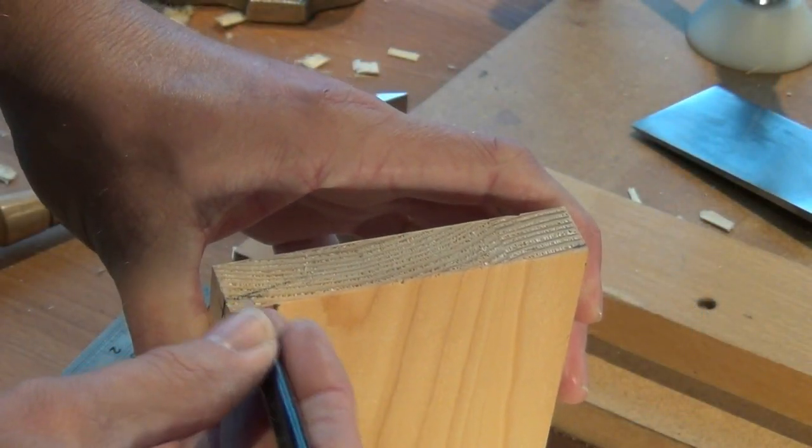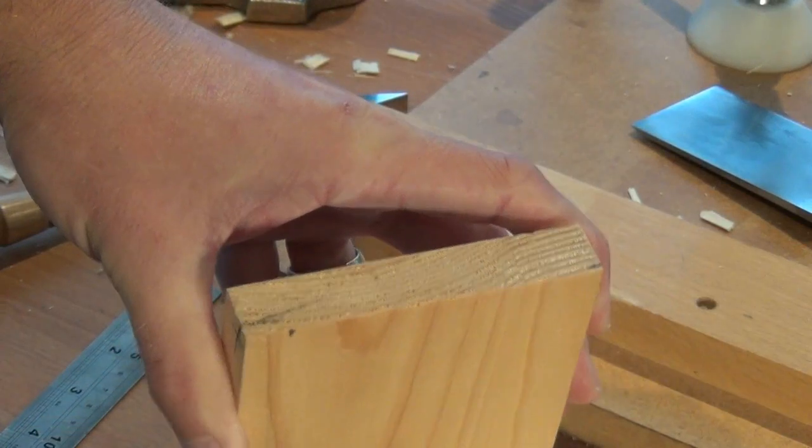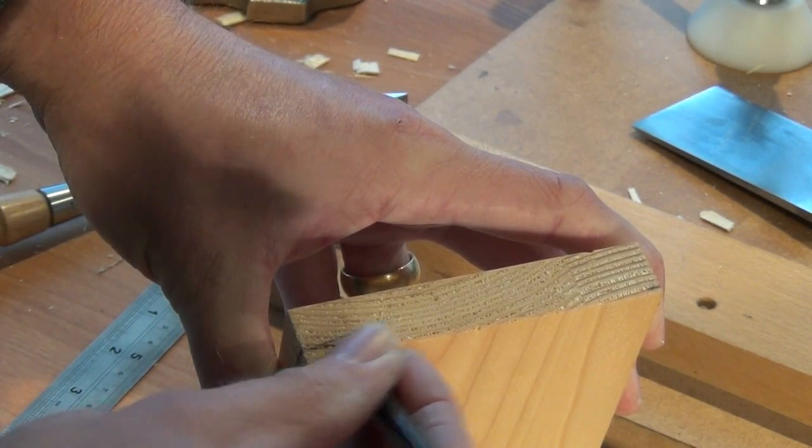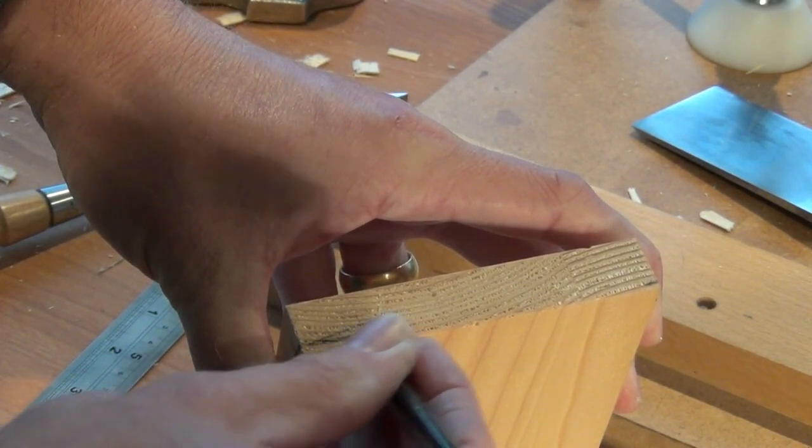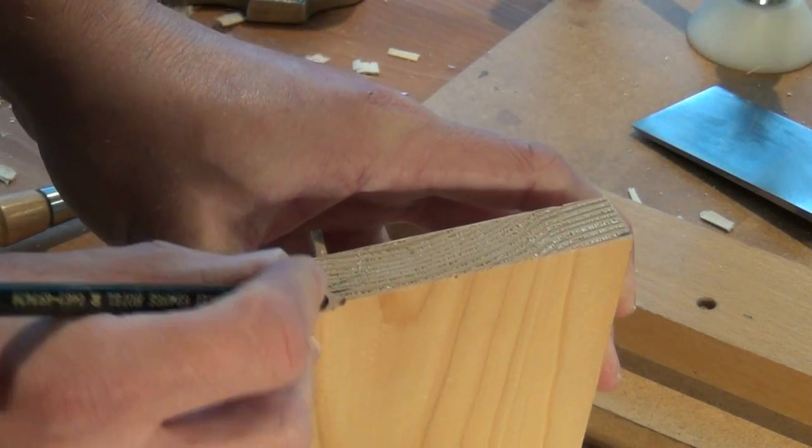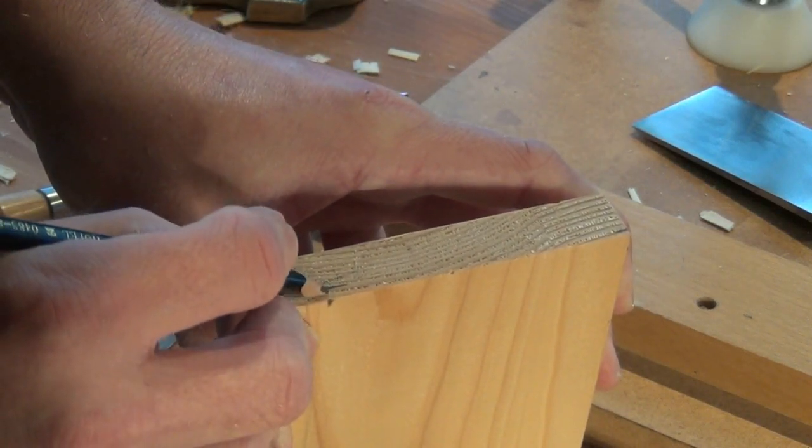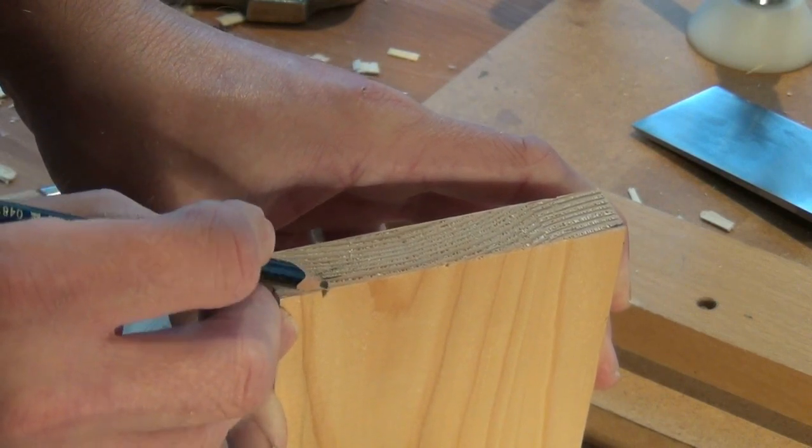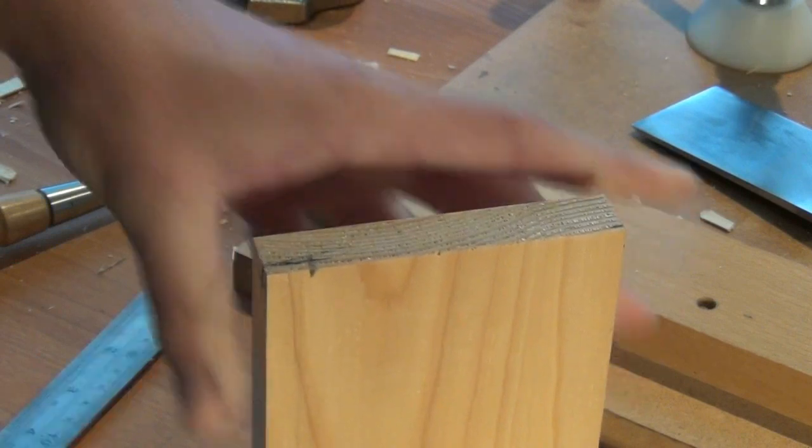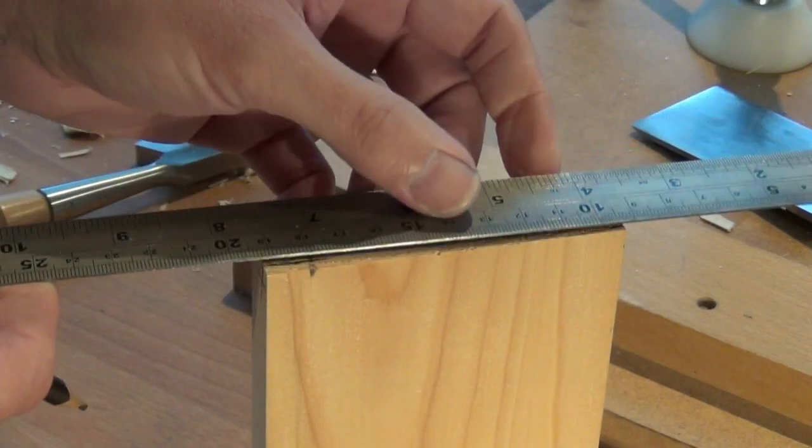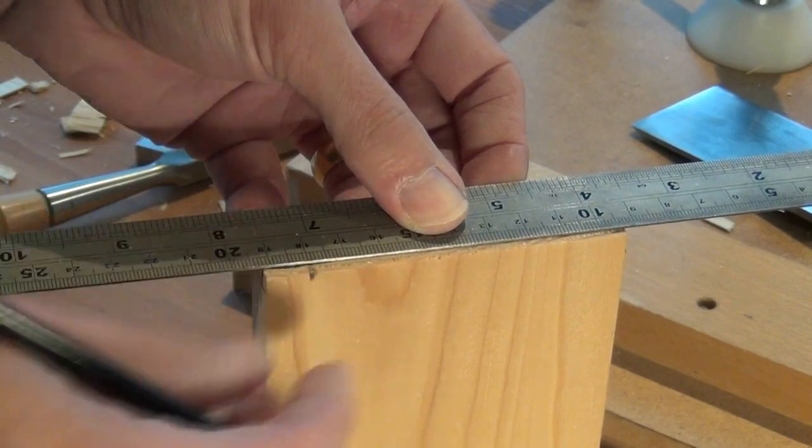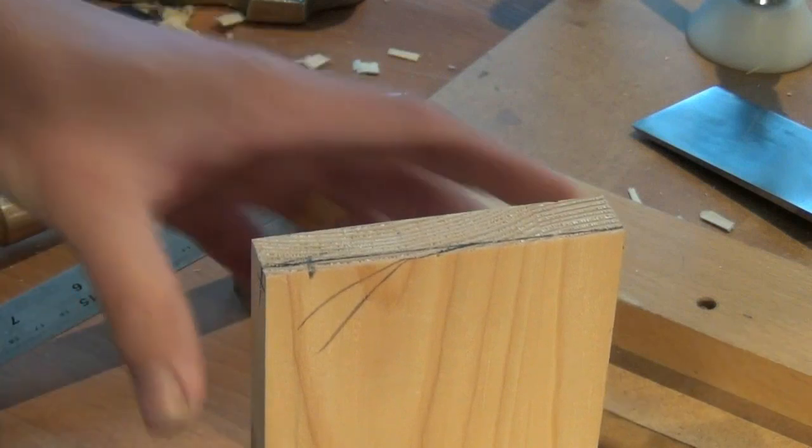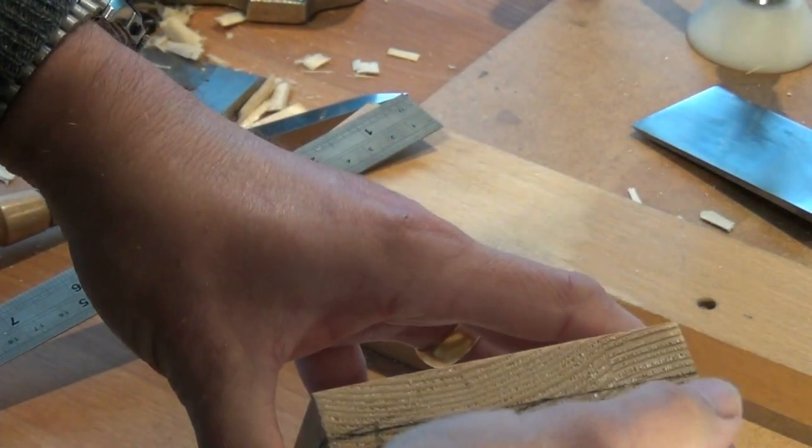Transfer the intersection line at the front parallel with the bottom of the shelf up to the point where the stopped end is. And then draw a line from there to the rear mark. And that's the angle we need to now cut.